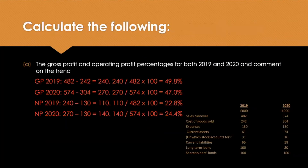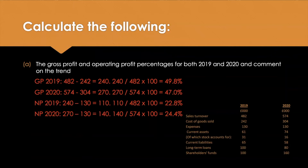This information will be used firstly to look at gross profit and operating profit. The gross profit in 2019 was the difference between the turnover and the cost of goods sold, so we have 482 million turnover minus 242 in cost of goods sold, which leaves a gross profit of 240. You then divide that by the turnover and times it by 100 - in this example, 49.8% gross profit. For 2020, the actual profit went up but the ratio dropped to 47% gross profit.